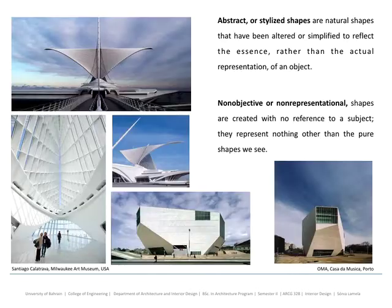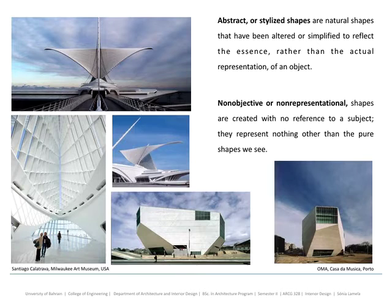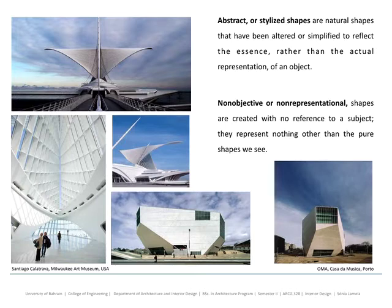These are the normal geometric shapes. But of course there are different shapes we can have in architecture — we can go beyond normal geometric shapes and reach more abstract or stylized shapes, which many times are natural shapes that are changed to reflect the conceptual approach of a project. We have some examples of Calatrava's work here. We can even go beyond that to non-objective or non-representative shapes that are not taking inspiration from anything real or abstract, but are actually created with no reference to anything — they don't represent anything except the shape itself.